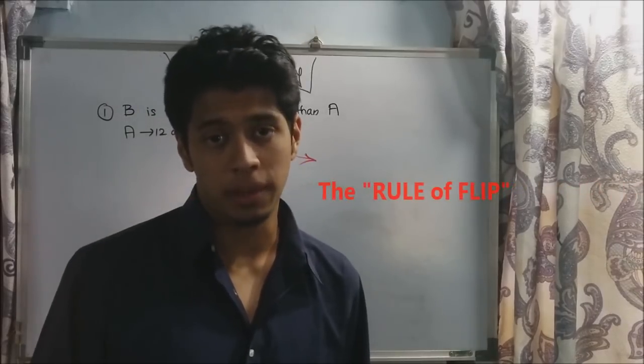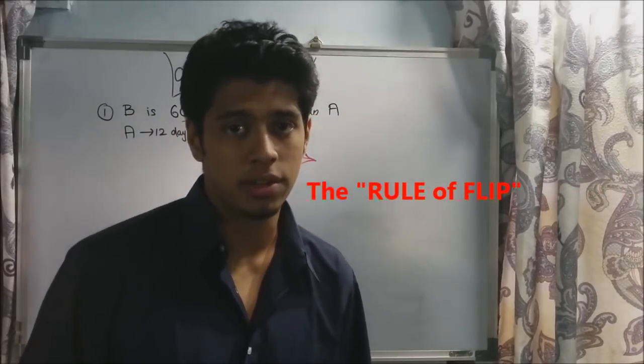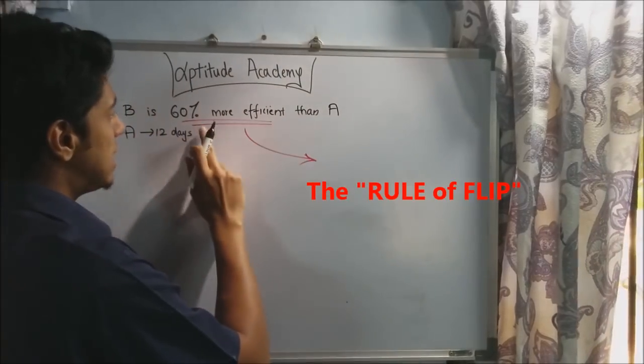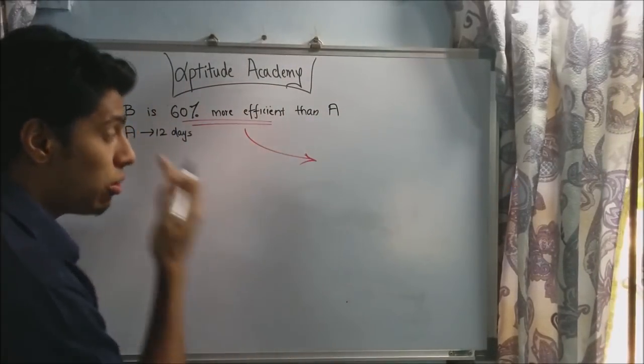To solve problem 1, you need to know the rule of flip. I have explained this in Part 1 of my videos. Now, B is said to be 60% more efficient than A. How do we understand this?